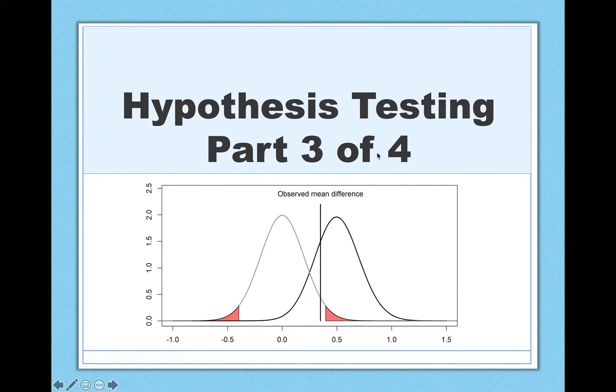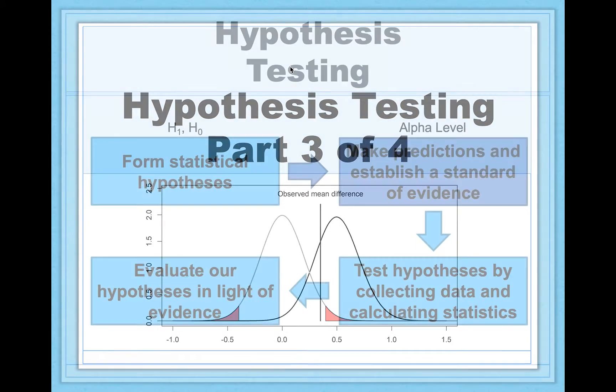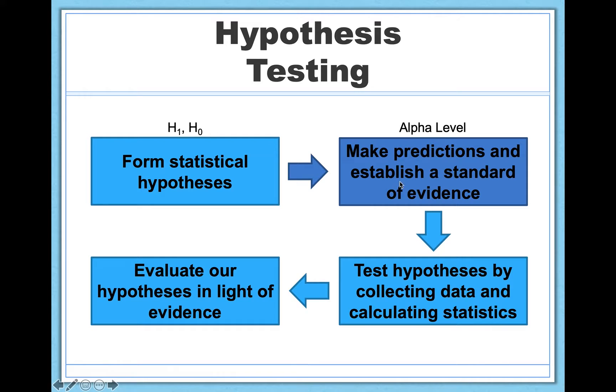Welcome to part three of our four-part mini-series on hypothesis testing. In our last video, we talked about establishing a standard of evidence, which was all about our alpha level, determining what we would need to find in our study in order to be convinced that there's a real effect. I'll make one additional note that you'll never have to calculate an alpha level. It's not something computational. It's typically set by standards in your field, which in psychology and in most fields, your alpha will be 0.05.